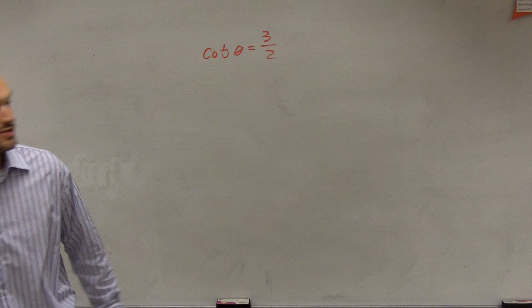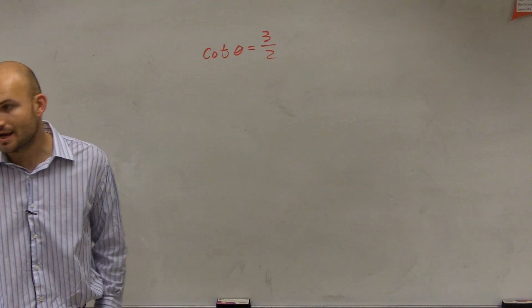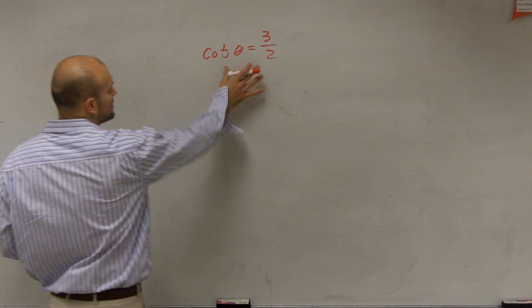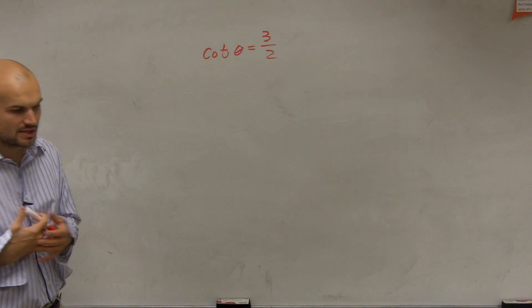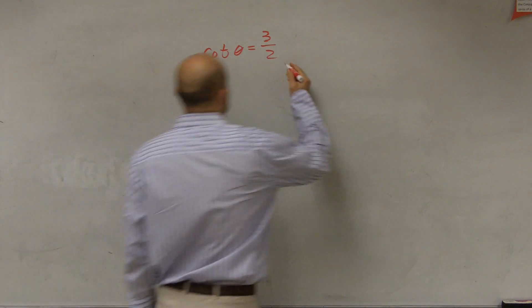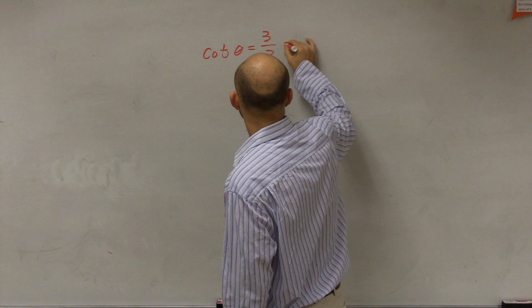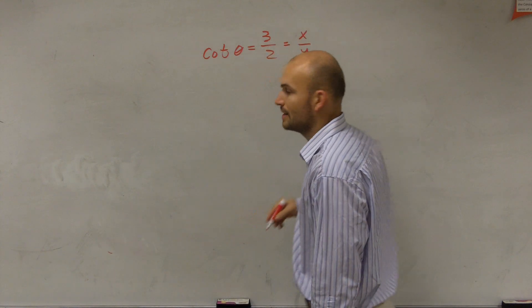So what we're going to have to do is to evaluate our trigonometric terms, we're going to have to use a triangle. One thing I need to notice is if I remember cotangent, when we were talking about cotangent with the unit circle, cotangent was equal to kind of your x over y.